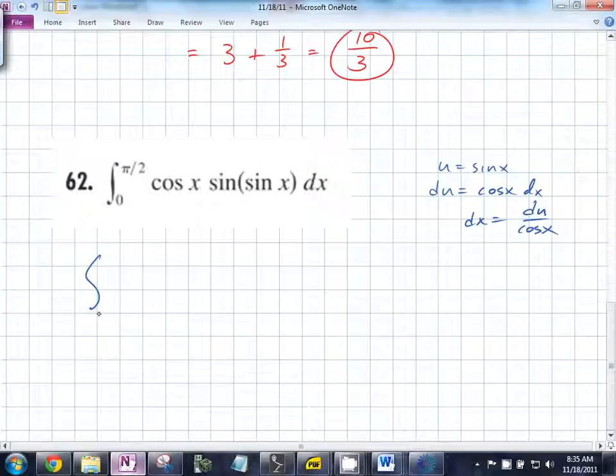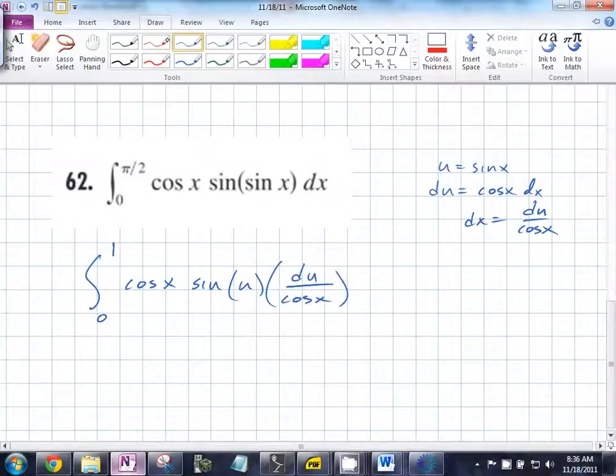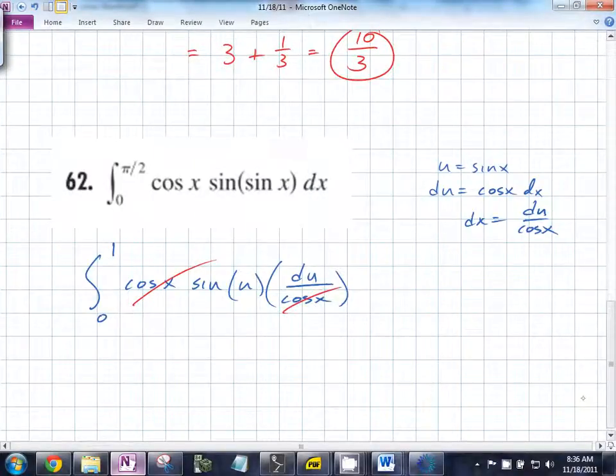My AP Calculus class just scored a 75% on that question. What's the sine of pi over two? On the count of three, you're going to say out loud at a good volume what sine of pi over two is. One, two, three. One. Good. So sine of u times du over cosine x. What cancels? Cosine x. That's nice.